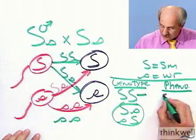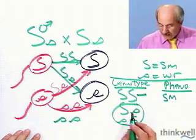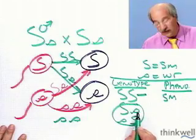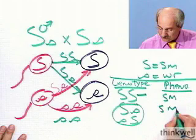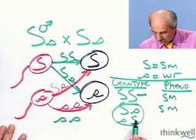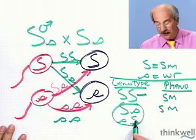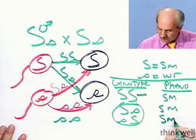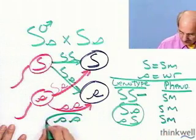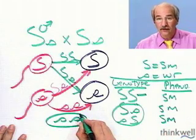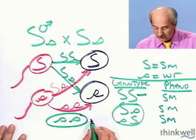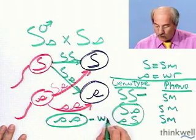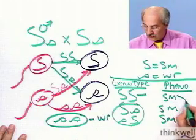This genotype big S big S is smooth. This genotype big S little s - smooth dominates - smooth. This genotype little s big S - smooth dominates - smooth. But the wrinkled pops out in one-fourth of the cases. Phenotype wrinkled. Three-quarters smooth, one-quarter wrinkled.